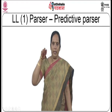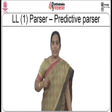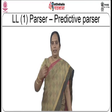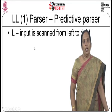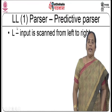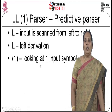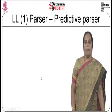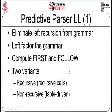After computing left recursion elimination and left factoring, the modified grammar is used for constructing a predictive parsing table. In LL(1), the first L means input is scanned left to right, the second L means left derivation is applied, and 1 means only one input symbol is looked at at any point. The steps are: left factor the grammar, compute first and follow, then construct the parsing table. The non-recursive table-driven approach is used as it avoids backtracking to a greater extent.